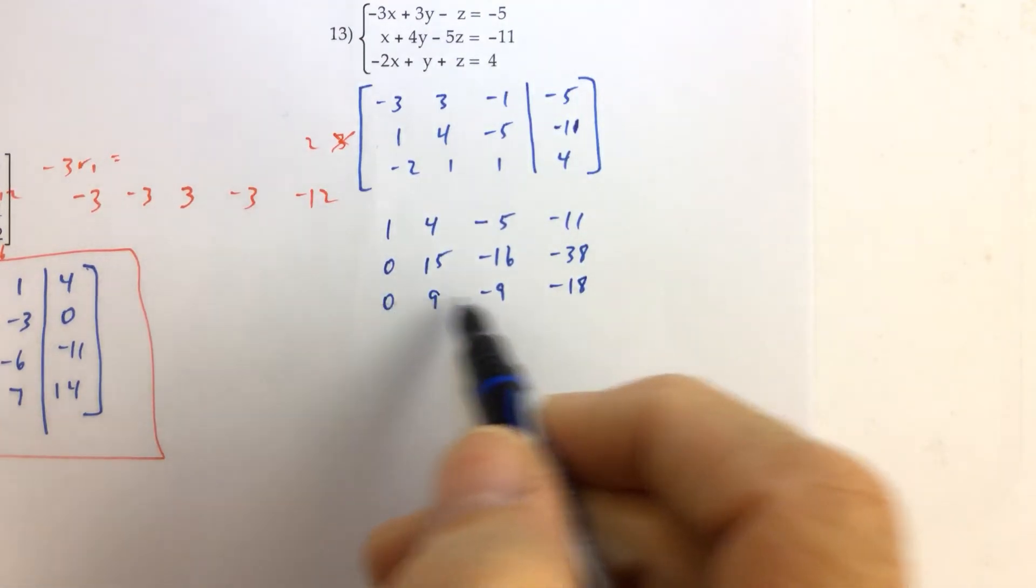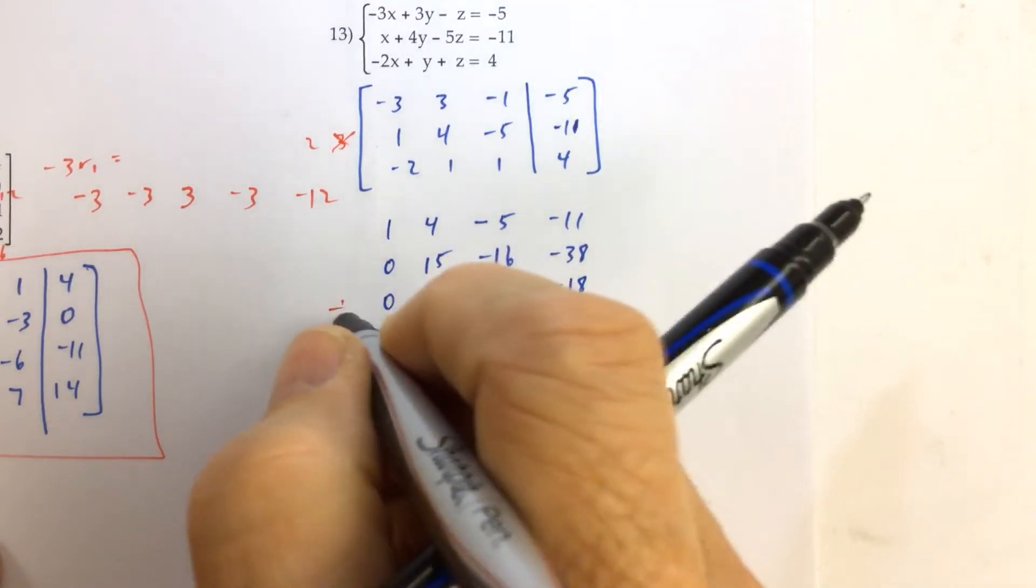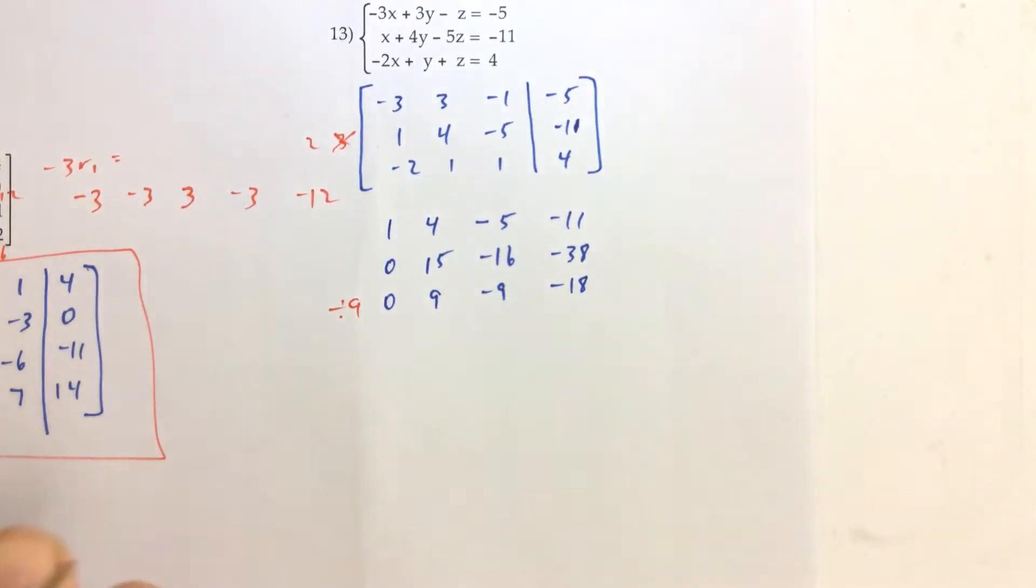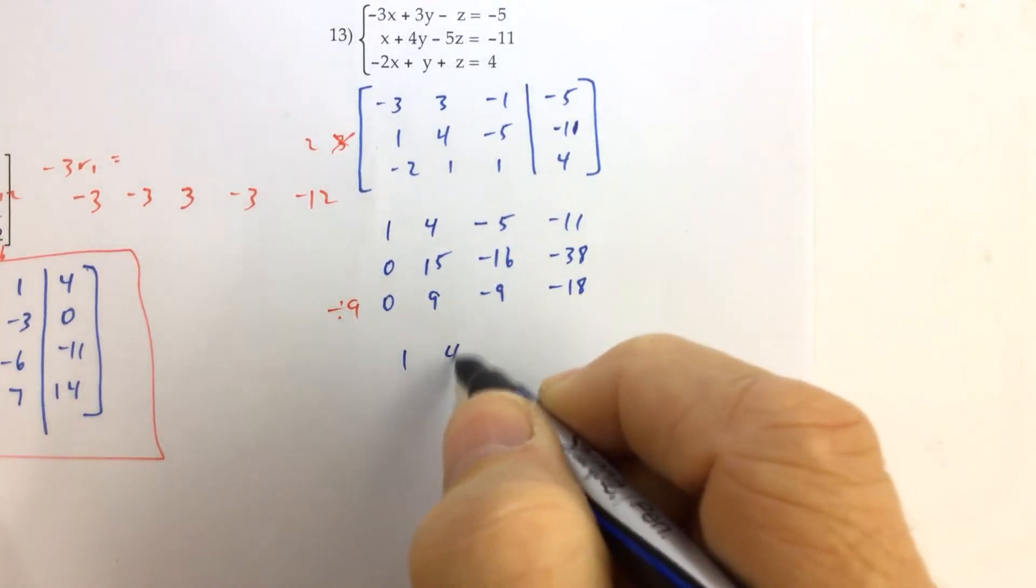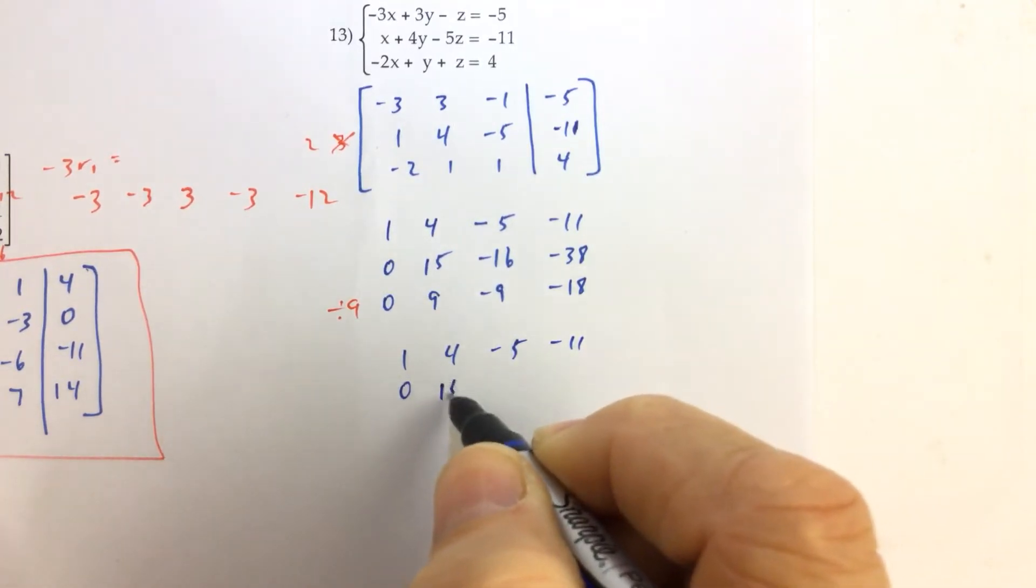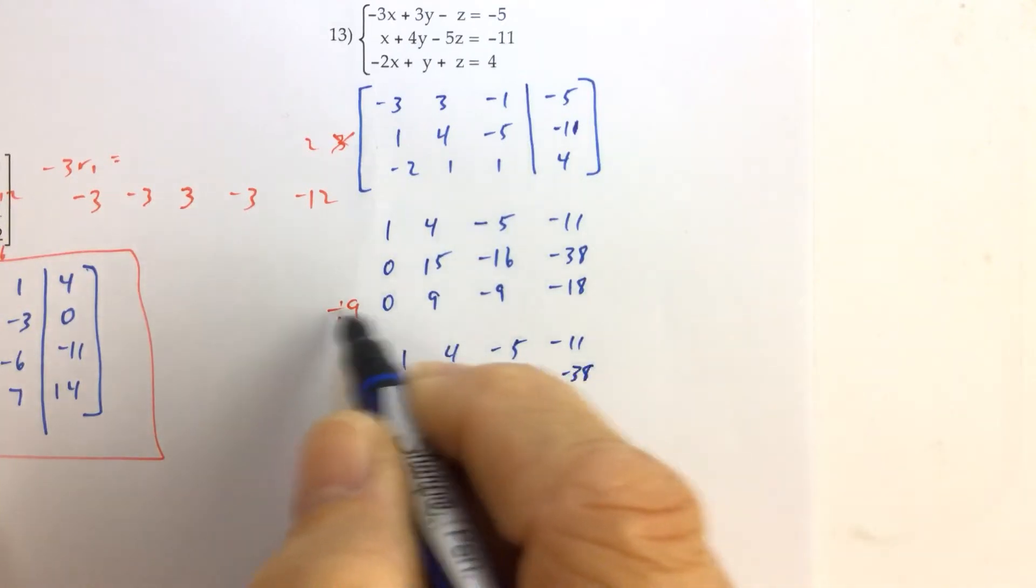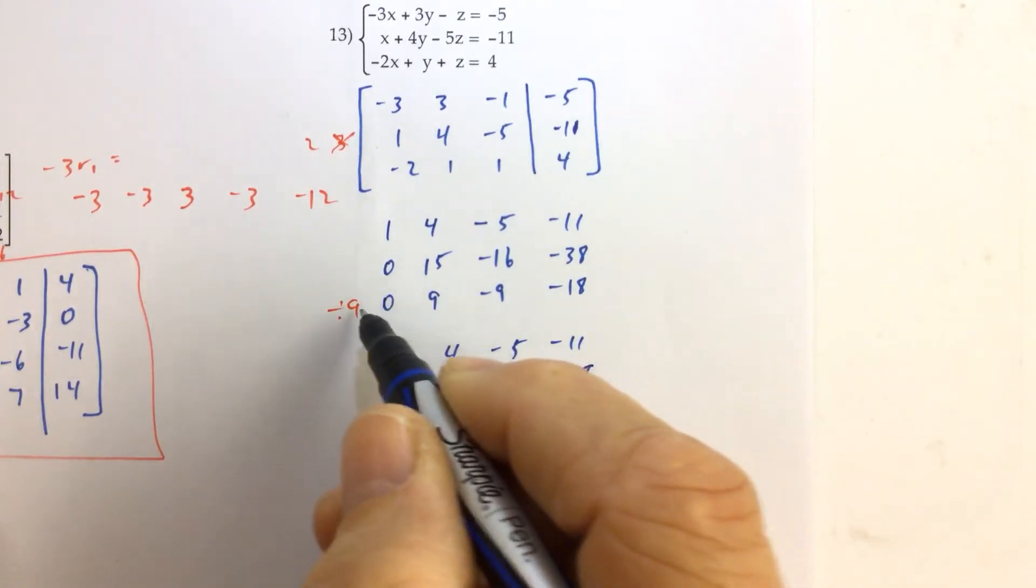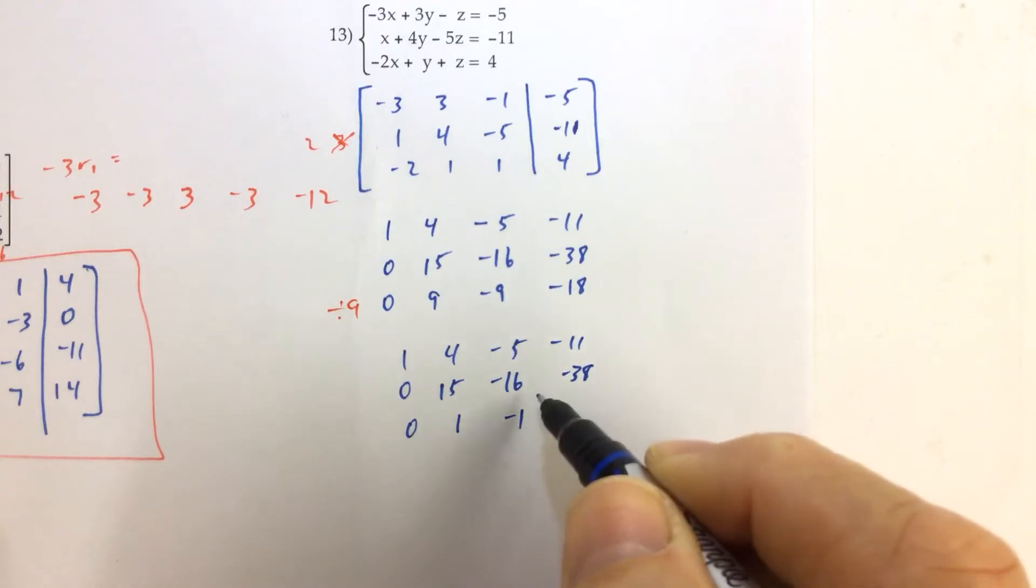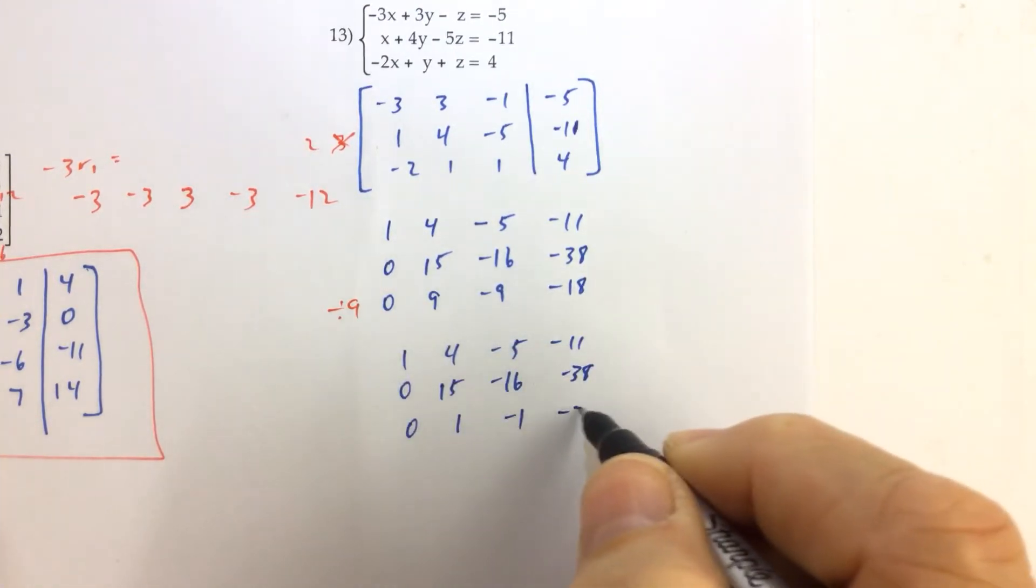Now, I'm going to notice that each of these entries here can be divided by nine. So I'm going to divide by nine and this guy. So I'm going to rewrite the first row. Rewrite the second row. Being really careful, you've got to be really careful here. And then, the third row, zero divided by nine is zero. Nine divided by nine is one. We get negative nine divided by nine is negative one. And then, negative eighteen divided by nine is negative two.